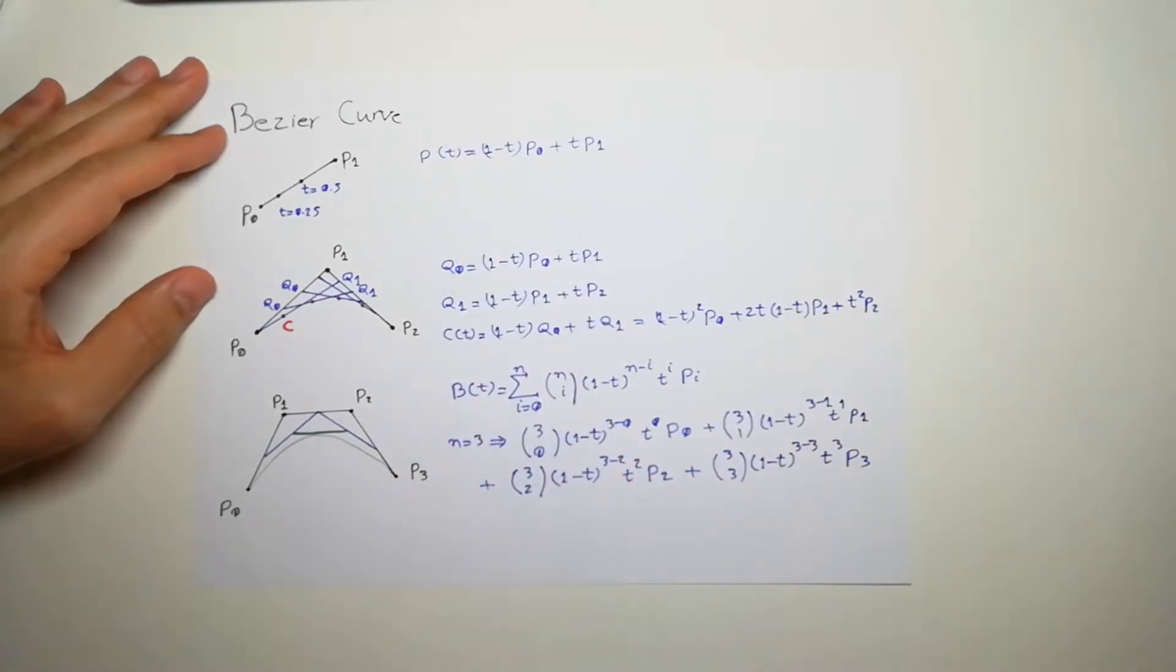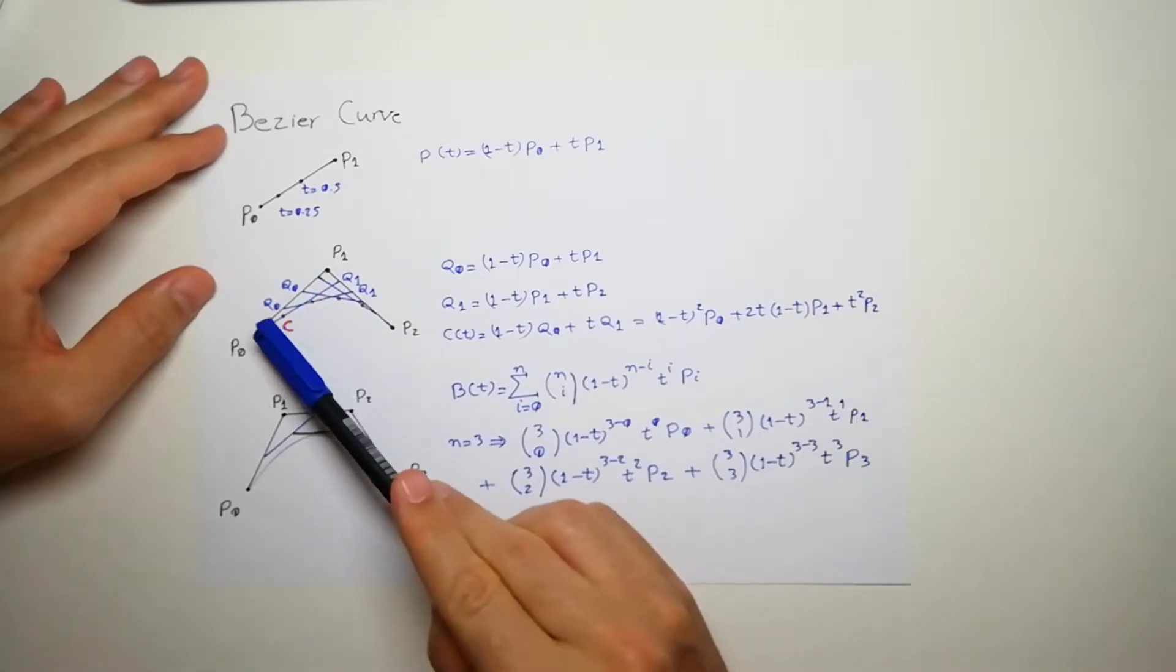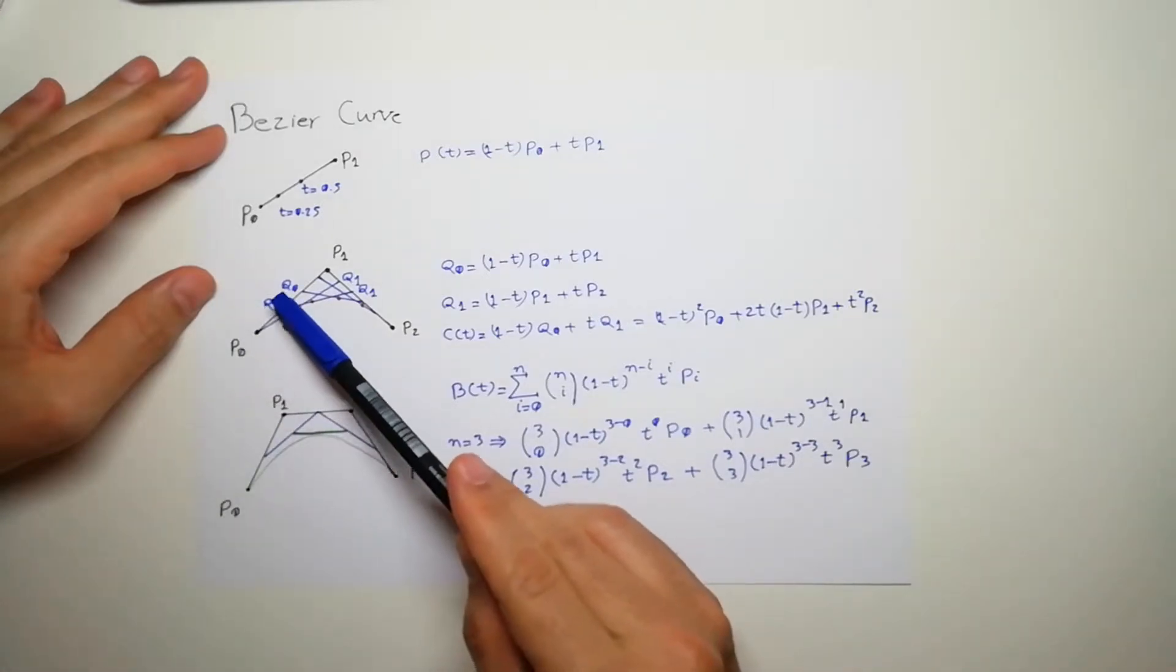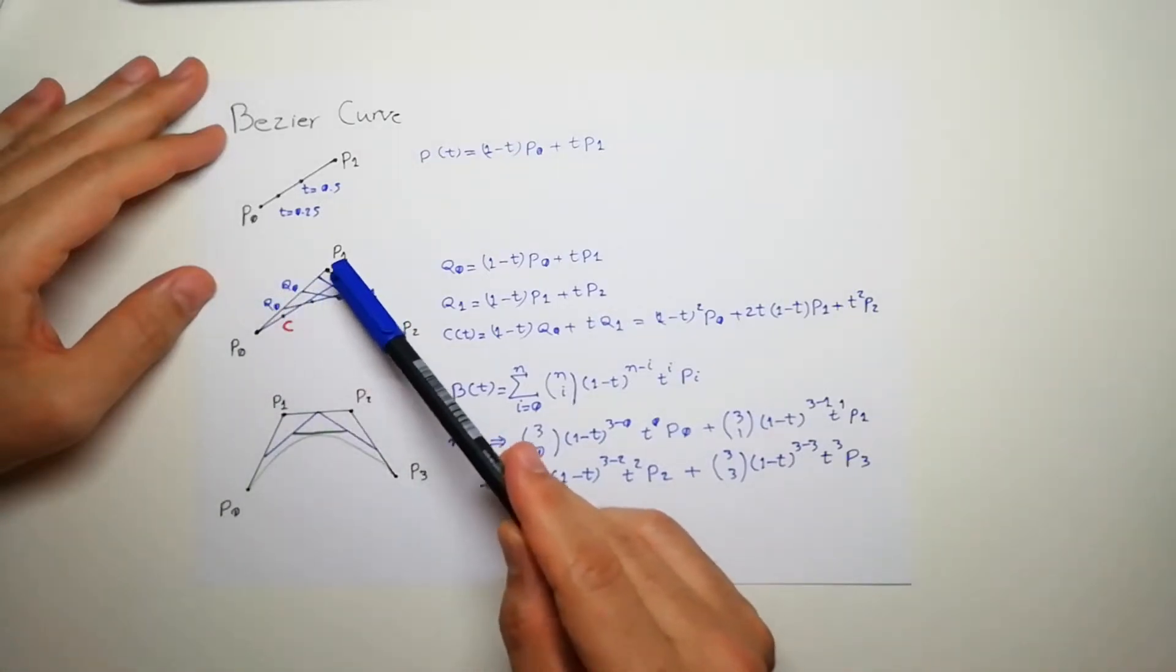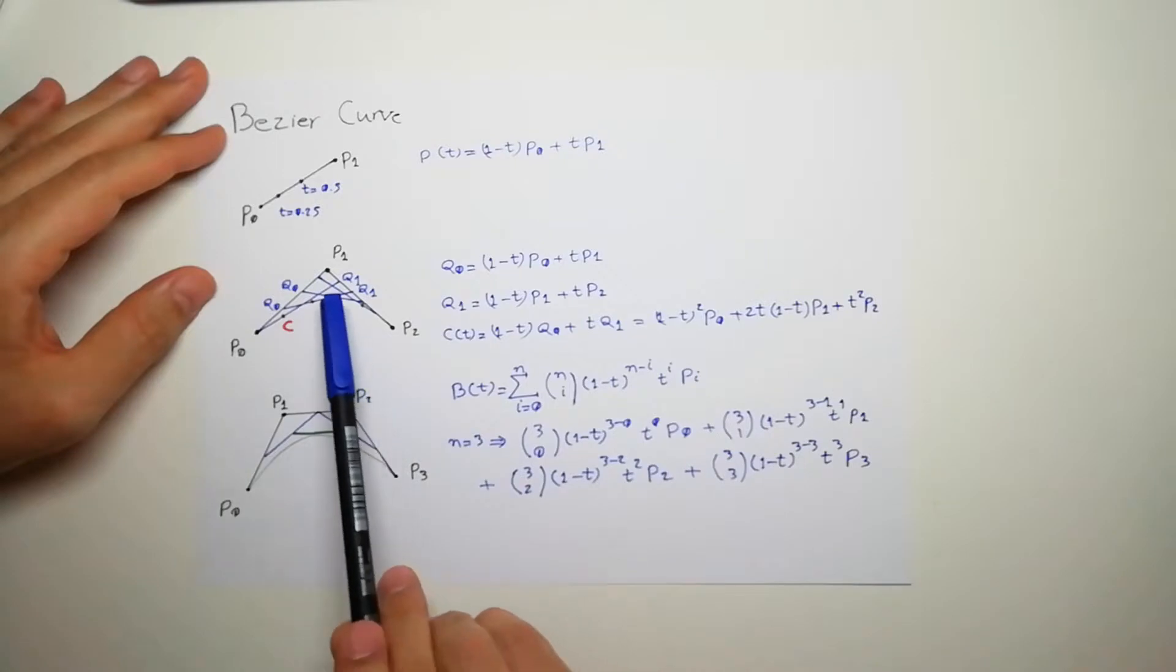Now imagine you have three points and you do the same here. Put a different t, you will end up at different points here which I call them q0, and you will put different t which gives you a different q1 here.